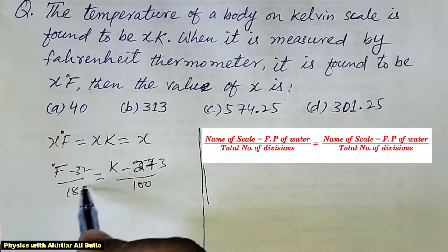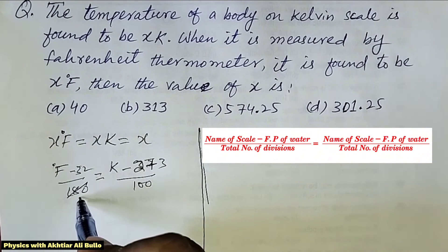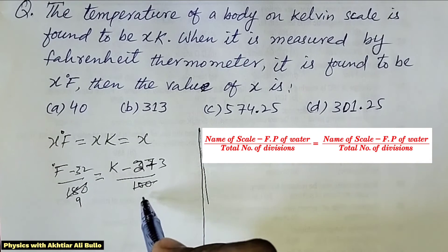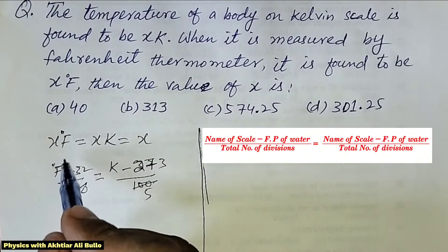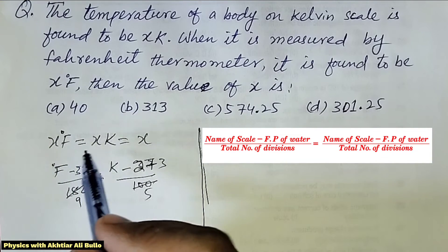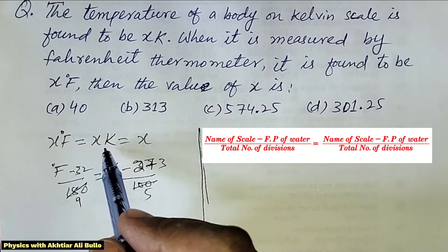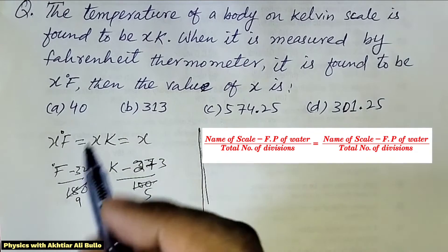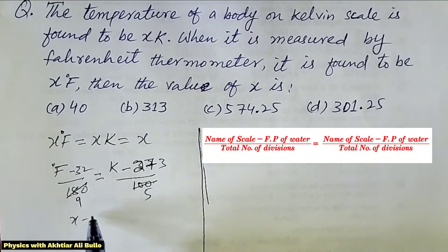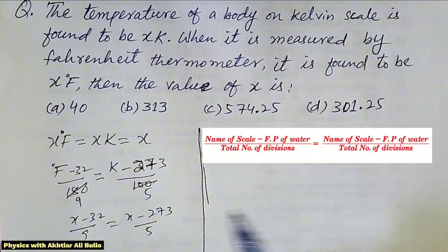Simplifying: 180 divided by 20 is 9, and 100 divided by 20 is 5. Since x°F equals x K equals x, we have (x - 32) / 9 equals (x - 273) / 5.